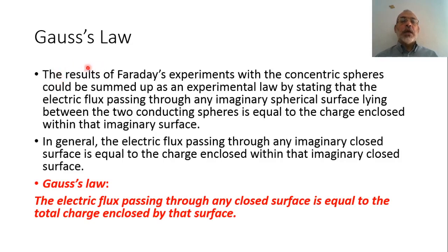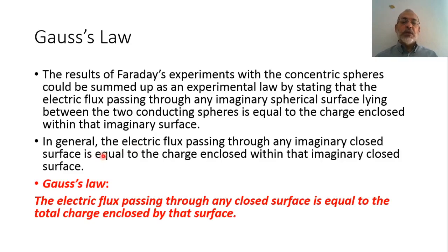However, Gauss has generalized this experiment and introduced that the electric flux passing through any imaginary closed surface — it doesn't have to be a spherical surface — is equal to the charge enclosed within that imaginary closed surface. So effectively, Faraday's enclosed charge corresponds to the charge on the inner sphere, and the closed surface corresponds to the outer sphere. The electric flux passing through the outer sphere equals the electric flux passing through any closed surface, which equals the total charge enclosed by that surface.